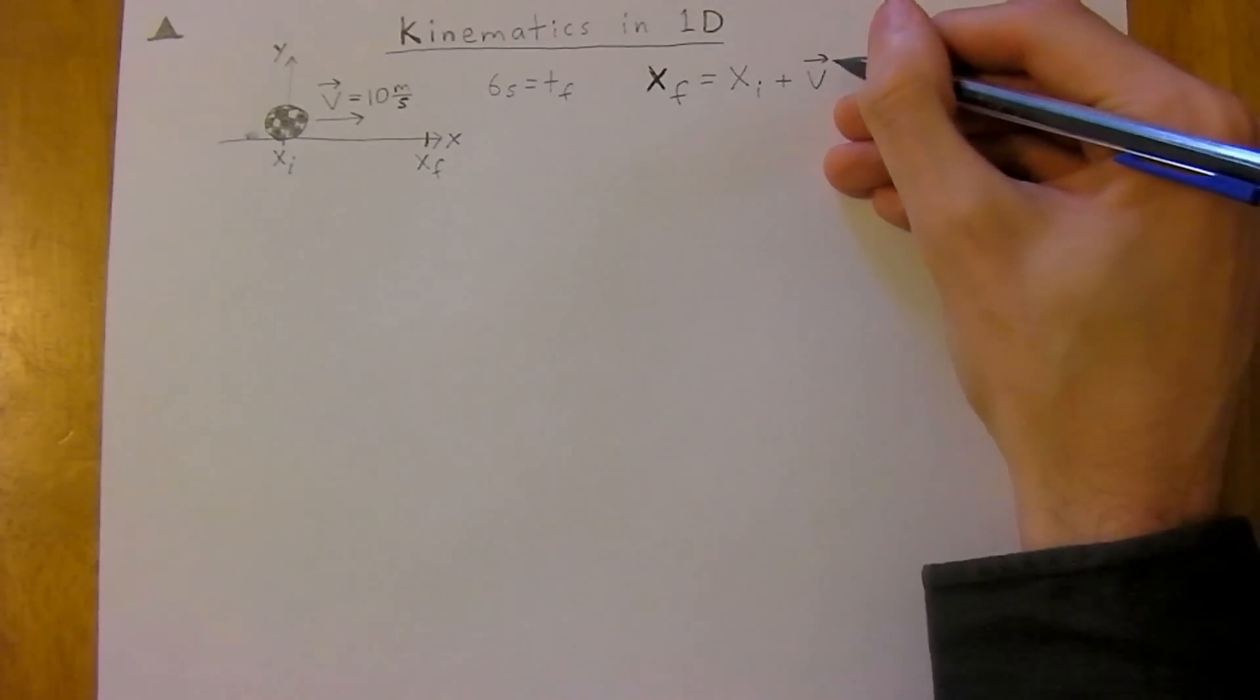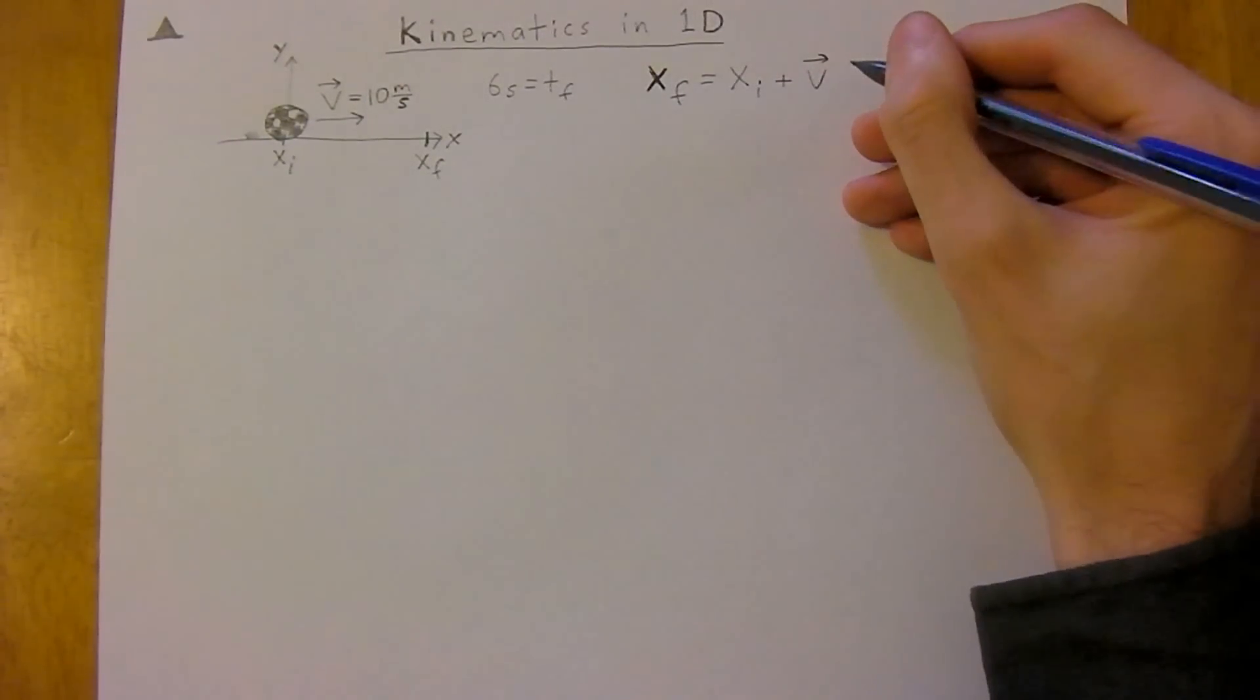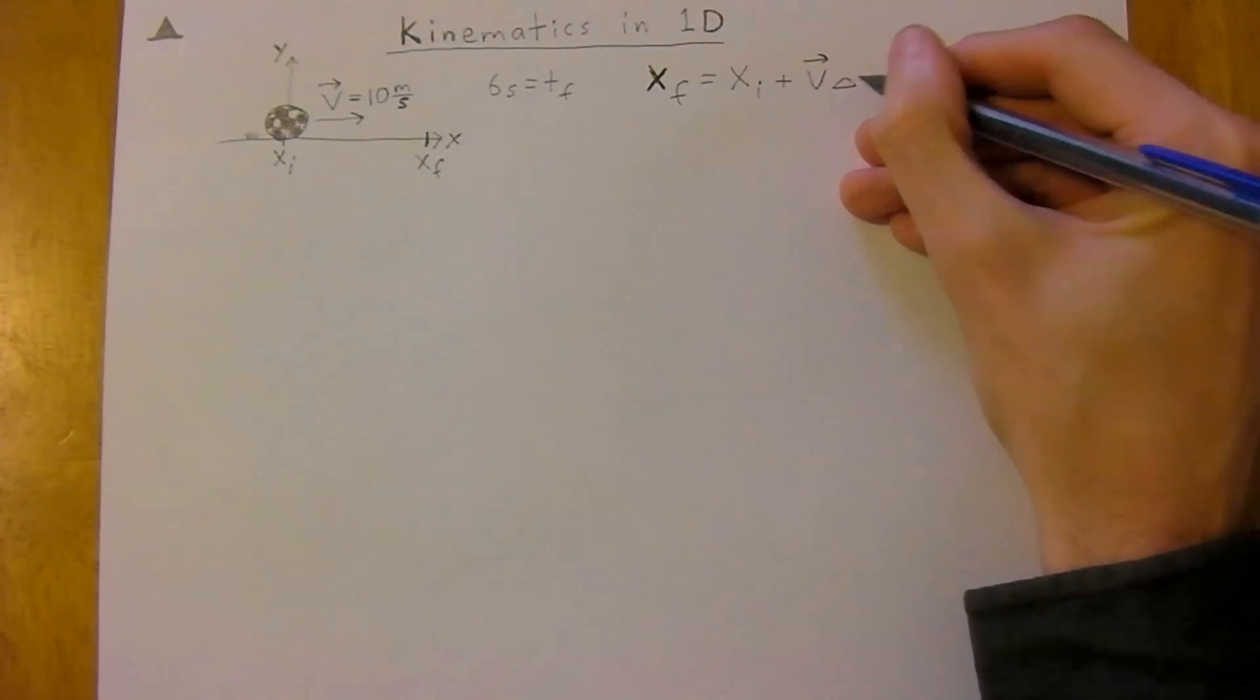And velocity is a vector, so it has a direction, we denote that with the arrow, times its change in time.